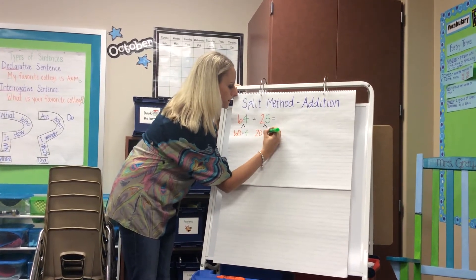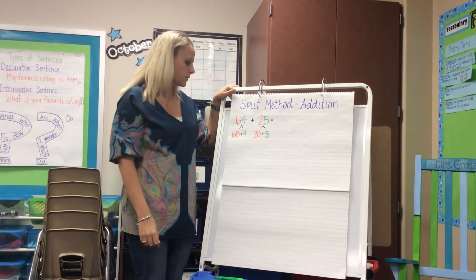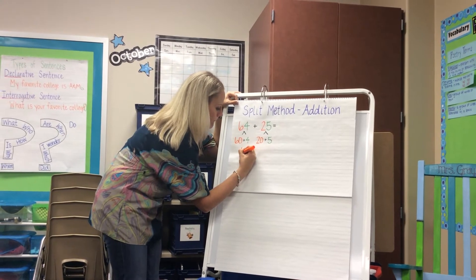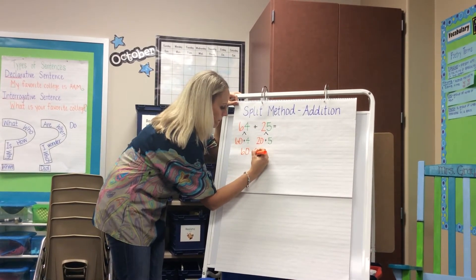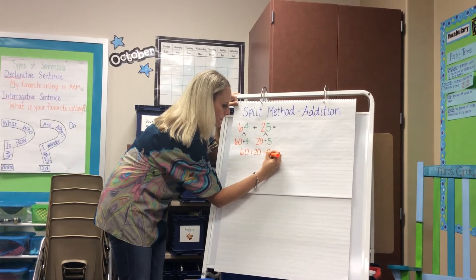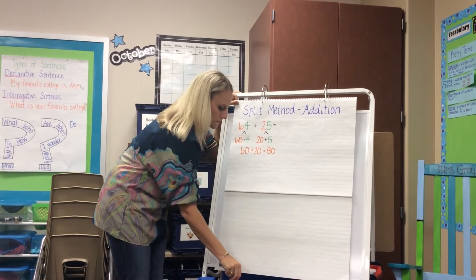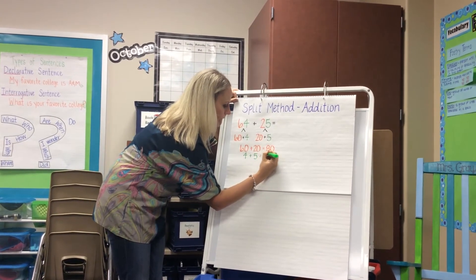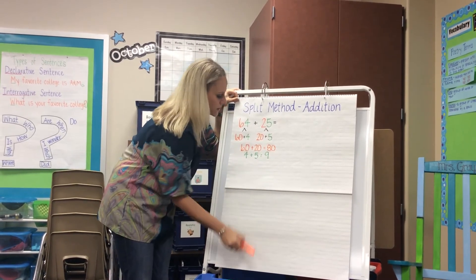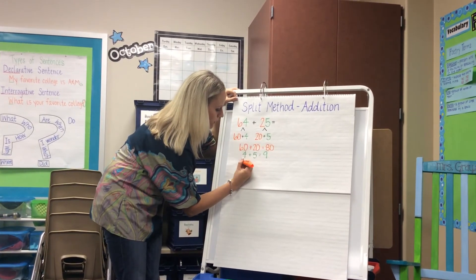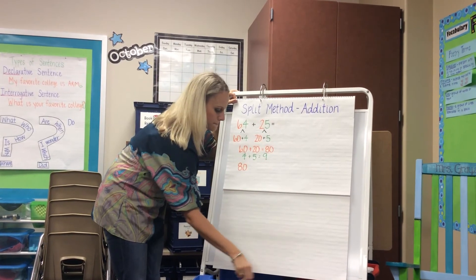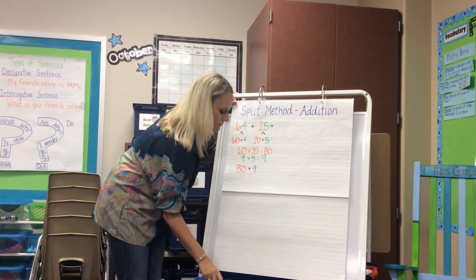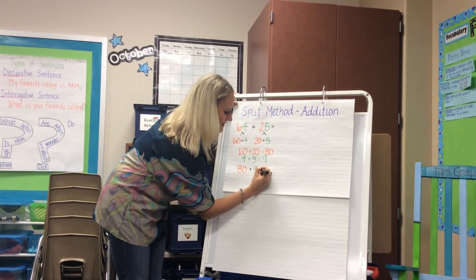After they've broken their number and split it apart into expanded form, they will then add the place values. So 60 plus 20 is 80, and 4 plus 5 is 9. They will then take the numbers they've split apart and put them back together. So 80 plus 9 is 89.